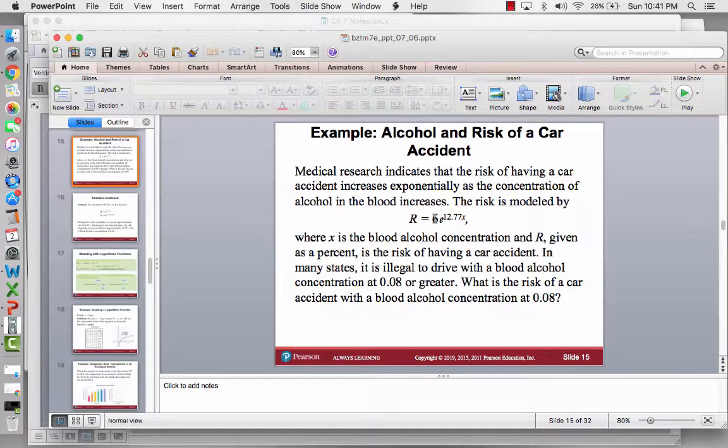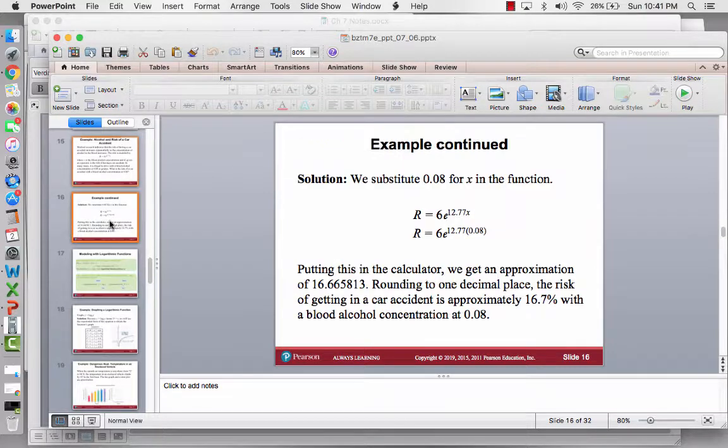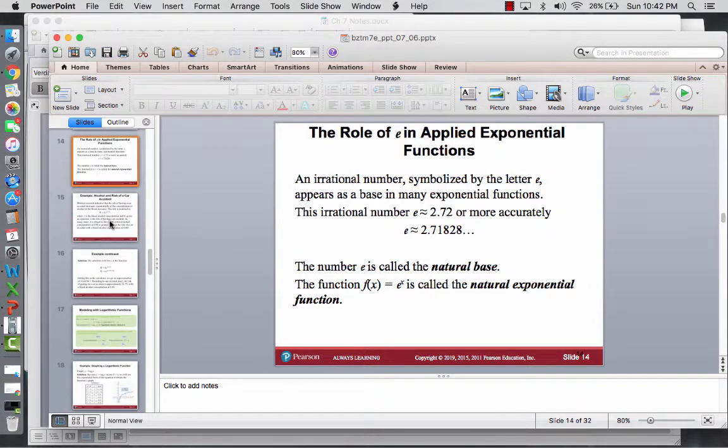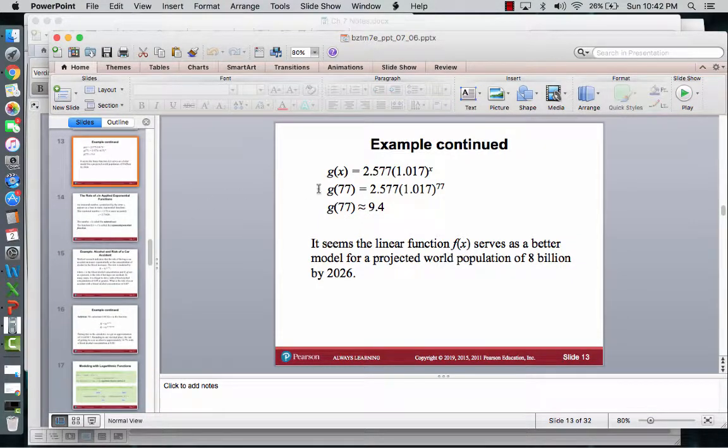An exponential function, the graph for that looks something like where we have x in the exponent. So this is an example where the function has 6 times e to the 12.77 times x. So the big thing is an exponential function like this one has x in the exponent.